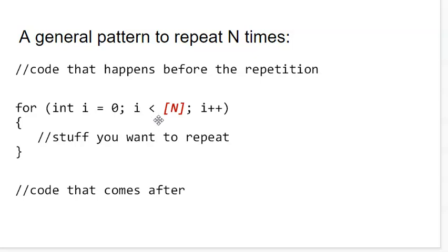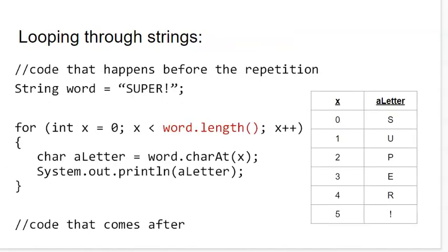If I want it to be a hundred and one, then I would say less than or equal to a hundred or just less than one oh one. Another type of maximum, which is used quite often, is when we are iterating or looping through a string. Now, we don't always know how many characters the string will have. So, if I know that the word is super with an exclamation point on the end, I know that that's six characters.